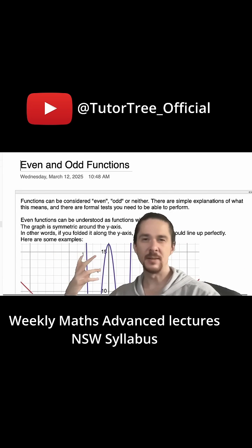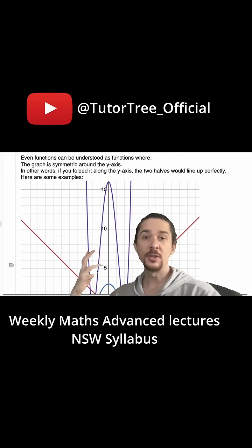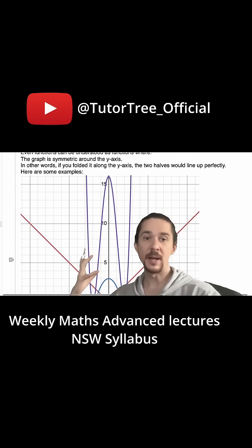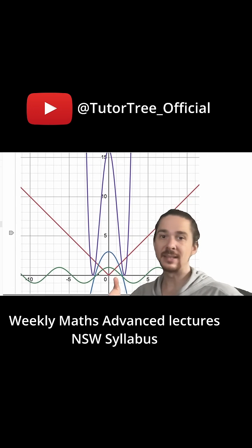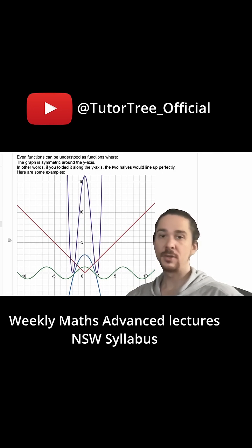Let me give you some examples. Even functions can be understood as functions where the graph is symmetric about the y-axis. In other words, if you folded it along the y-axis, the two halves would line up. It's symmetric around the y-axis.